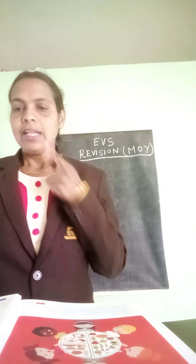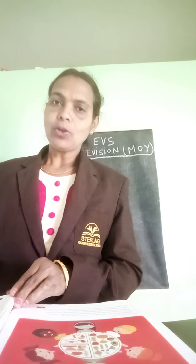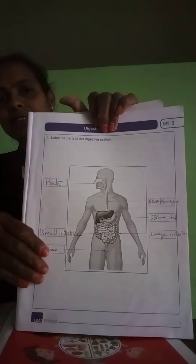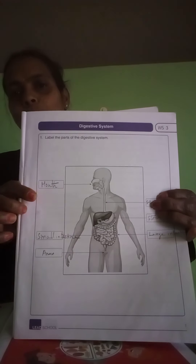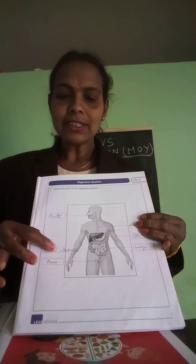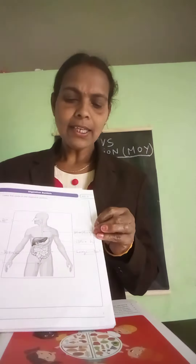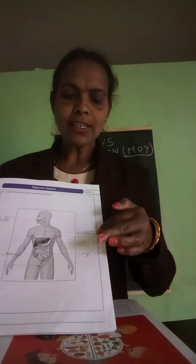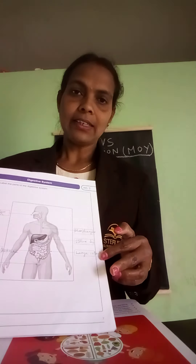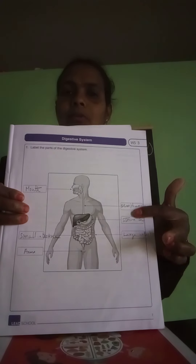Worksheet 3: label the parts of the digestive system. This is the digestive system diagram. Label all the parts — this is the mouth, this is the small intestine, this is the anus. From this side, it is the oesophagus, this is the stomach, and this is the large intestine. Write the labels in the boxes provided.